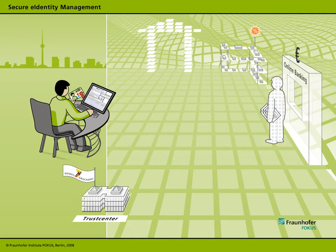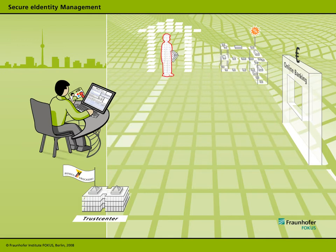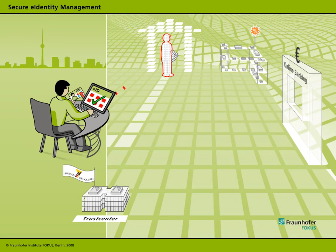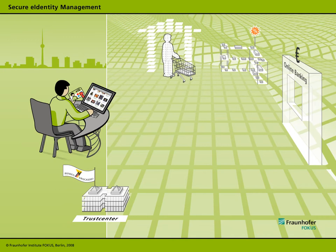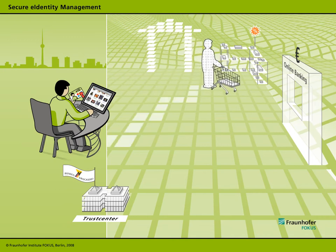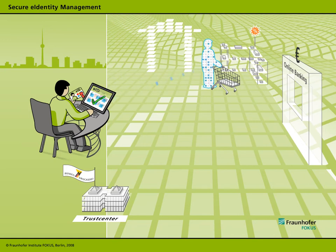This process using the electronic identity card in connection with an identity provider can be repeated for nearly all kinds of services. The crucial point is that each service provider receives only the essential information he really needs, and that each user of digital services retains full control of his personal data at all times — so that each real living person remains master of his or her own identity, even in a virtual world.